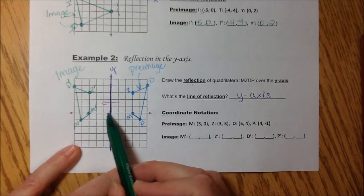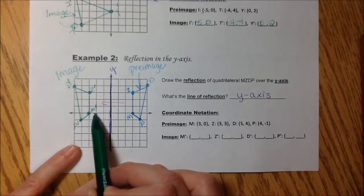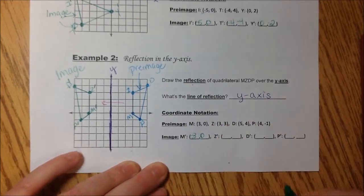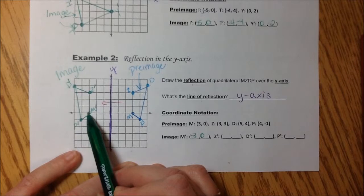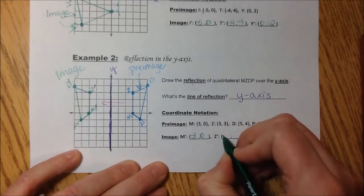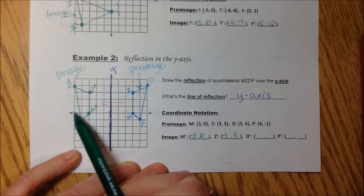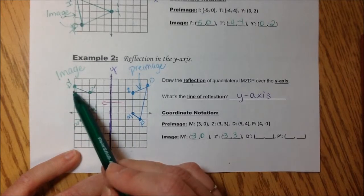So to find our ordered pairs. M is negative 3, 0. Z, negative 3, 3. D, negative 5, 4.